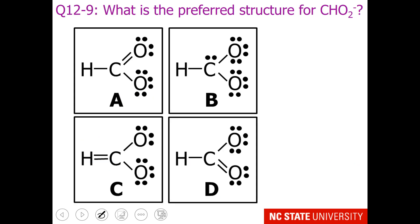This is another question concerning choosing the best structure by formal charge. Now hopefully you're going to take a look at C and say, no, nothing with 2 bonds to hydrogen.